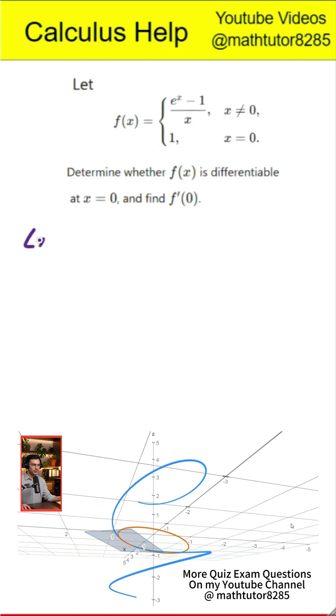First step, checking continuity at x equals 0. We find the limit of f of x as x approaches 0. The numerator e to the x minus 1 behaves approximately like x when x is near 0, so the whole fraction tends to 1.